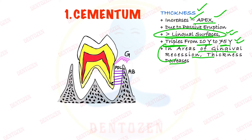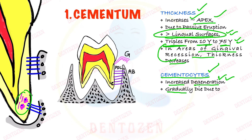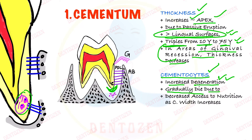The second important change is about the cells. Cementum is of two types: acellular cementum and cellular cementum. Cellular cementum contains cementocytes. With age, there is increased degeneration of these cells — they gradually die. Why? Because more cementum is getting deposited, so their nutritional source from the periodontal ligament decreases, and because of that the cementocytes start to die. They have decreased access to nutrition as the cementum width increases.